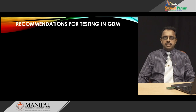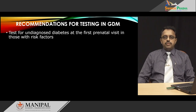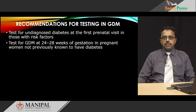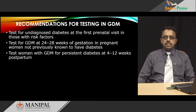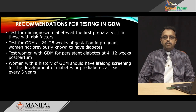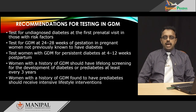Recommendations for testing in gestational diabetes: when a pregnant woman comes for her first antenatal checkup, a blood glucose test must be done to detect previously undiagnosed diabetes. If normal, test for gestational diabetes at 24 to 28 weeks of gestation. Test women with gestational diabetes for persistent diabetes after delivery, around 4 to 12 weeks after delivery. Women with a history of gestational diabetes must have lifelong screening for diabetes or pre-diabetes at least once every three years, and should be given intensive lifestyle interventions to prevent the development of type 2 diabetes.